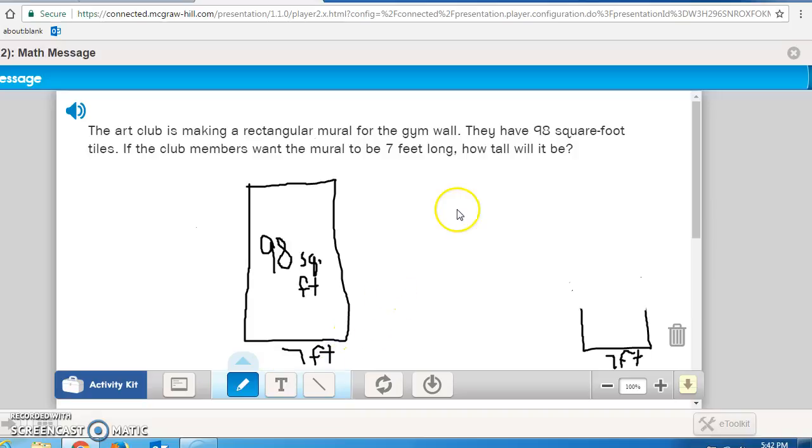What do we want to find out? Well, it says right here how tall it will be. So we want to find out the height of the mural. We need to write this as a number model with a letter standing for the unknown quantity. So we want to write this as 98 divided by 7 equals, and I'm going to use H for height. We can estimate the height of the mural. For instance, 98 is close to 100. 7 is fairly close to 10. So 100 divided by 10 would be 10. So I know my answer is going to be close to 10.